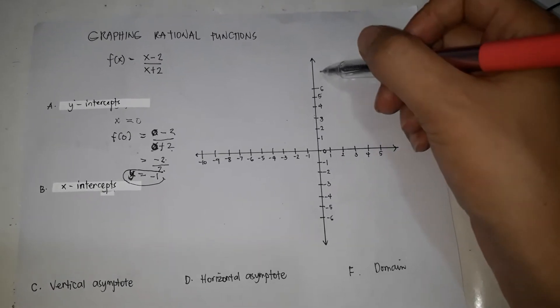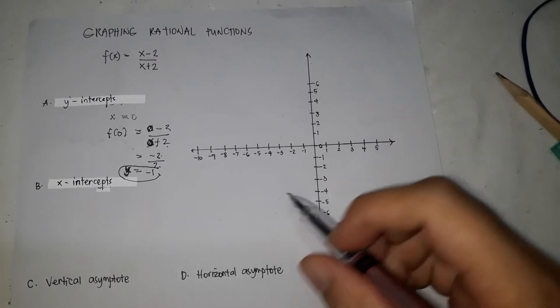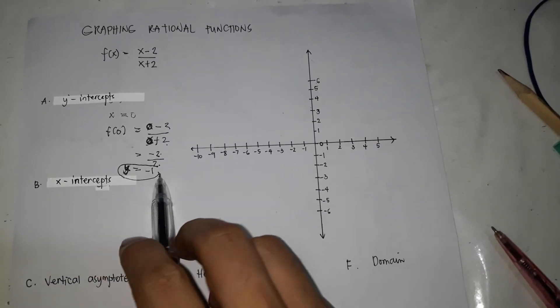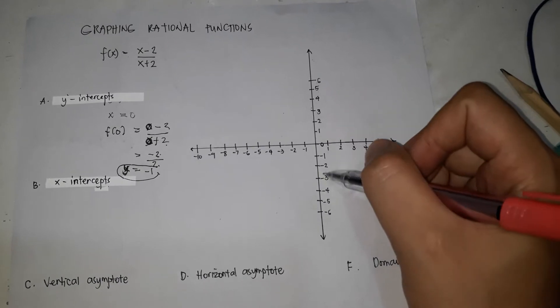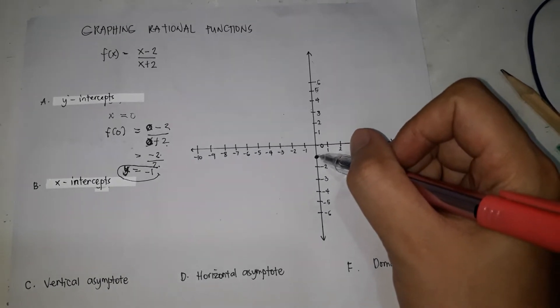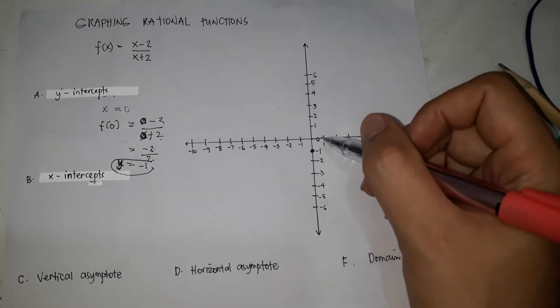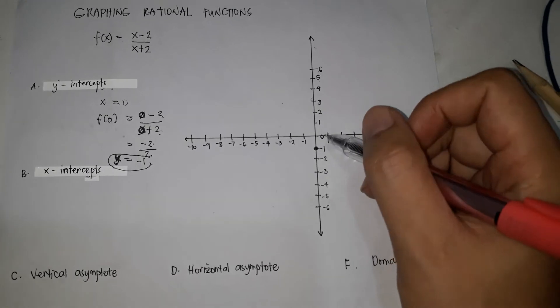So on the y-axis, where is y equals negative 1? Y equals negative 1 is here — that means the graph passes through that point.